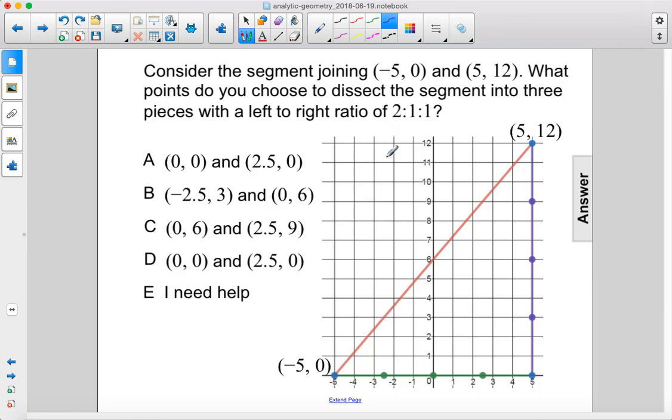Alright, so we're going to be dividing both the x and the y sides by how many? Well, 2 plus 1 plus 1 gives us 4. So we're going to be dividing this by 4 into 4 pieces and we're going to be dividing this into 4 pieces.